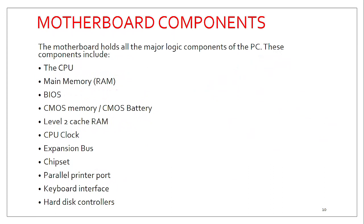Once we have this particular computer architecture, we can organize the various parts as shown. We can have the CPU, which is actually integrated within the motherboard. We also have the main memory. Other vital components integrated within the motherboard include the CMOS memory, the CMOS battery, and level 2 cache RAM.